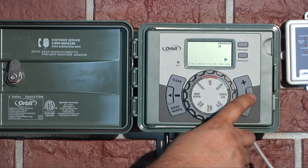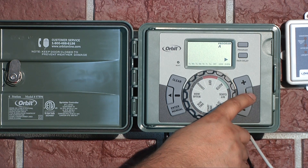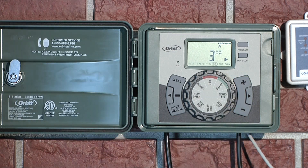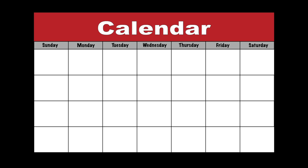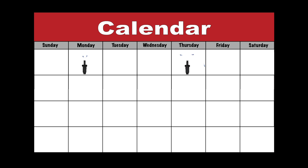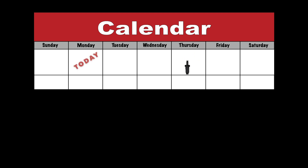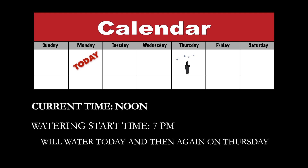Instead of watering on specific days of the week or on odd or even calendar days, interval watering allows you to specify the number of days between waterings. For example, if today is Monday and you set an interval of three days, the next watering day would be Thursday. Please note, if your start time occurs later than the time you complete programming, it will water the same day. For example, if you are programming your timer at noon and your start time is 7pm, your timer will water today.